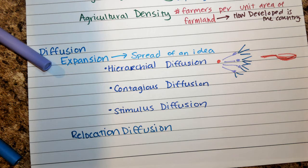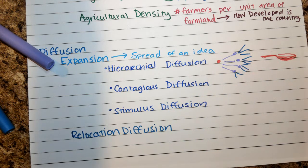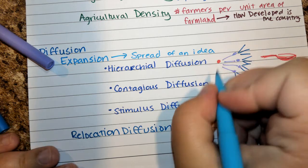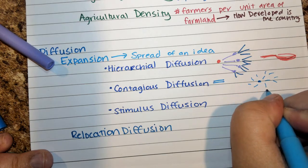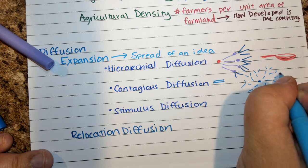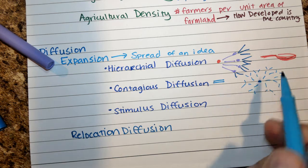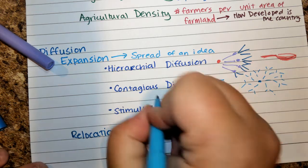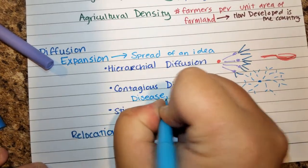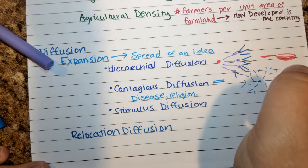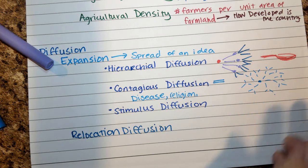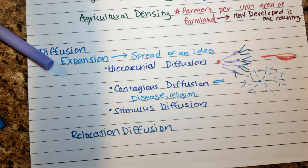Contagious diffusion spreads to everyone equally — it hits each portion equally. It starts in one area and then expands out without regard to wealth, age, or status. It originates in one area and spreads outward. Examples include disease — like the cholera example from the summer reading — religion, or even something like silly bands. It doesn't pick any one group; it just equally spreads within an area.